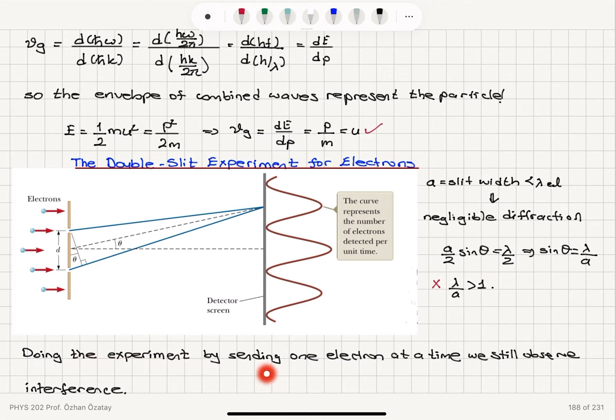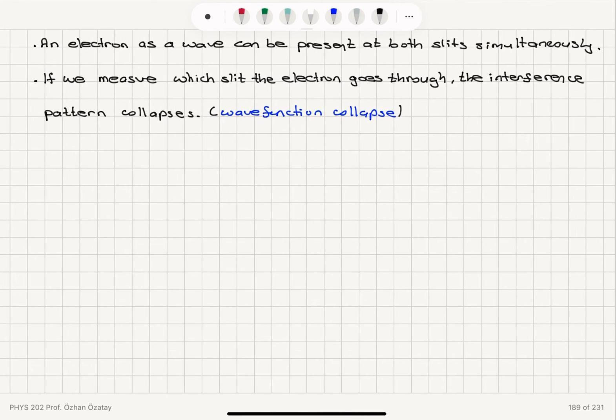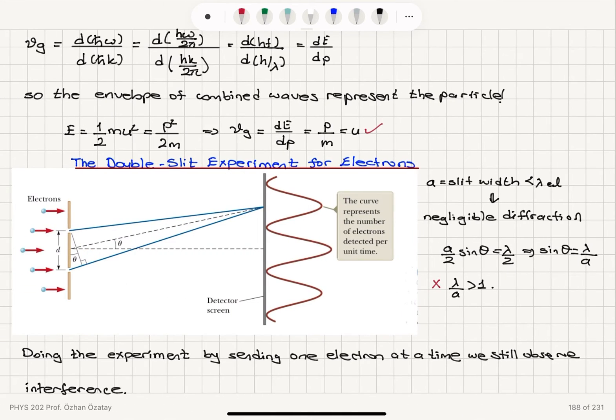Okay, so doing the experiment by sending one electron at a time, we still observe interference. And that's basically saying that an electron as a wave can be present at both slits simultaneously.